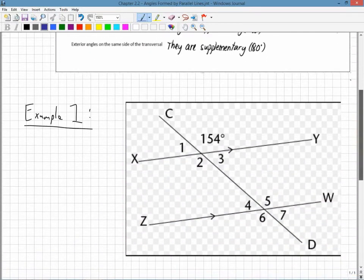Okay, so for example 1, we're going to go through, find the angle measurements, and use our rules as we go through. So I can see right away, one of the easiest ones to see are vertically opposite because it makes an X. If this one up here is 154, I know angle 2 down here is 154 degrees. And we used vertically opposite.